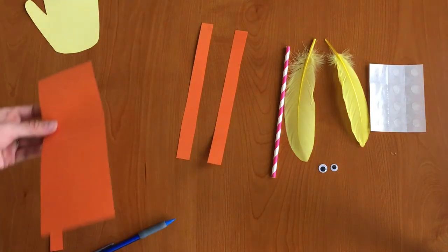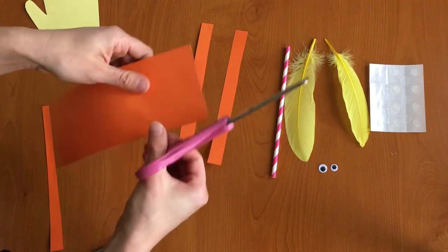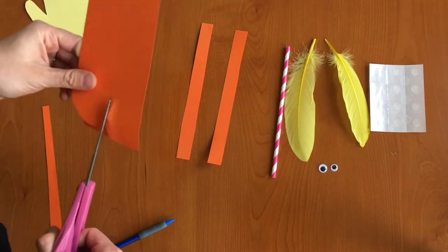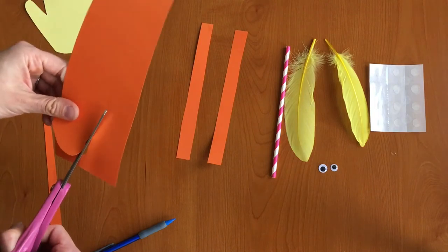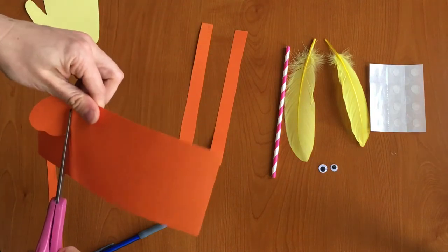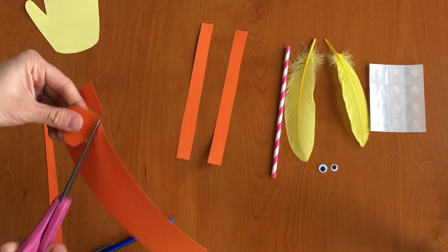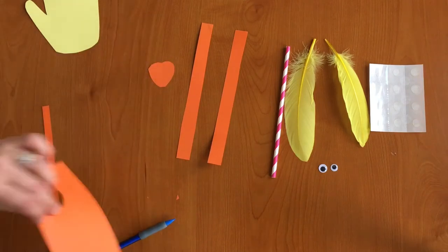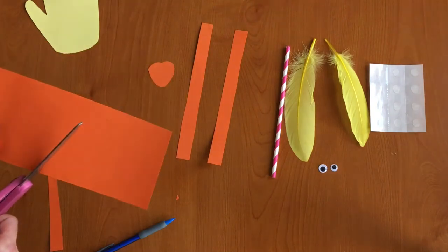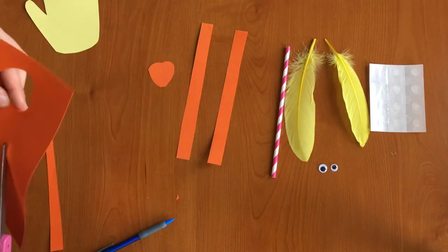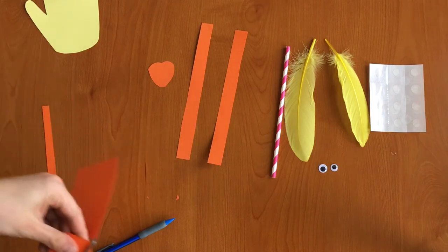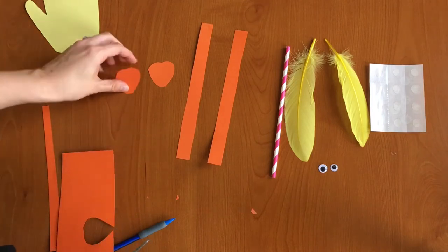And now you need to cut out two little feet as well. So I'm going to cut out some heart-shaped feet. There's one. And there's two.